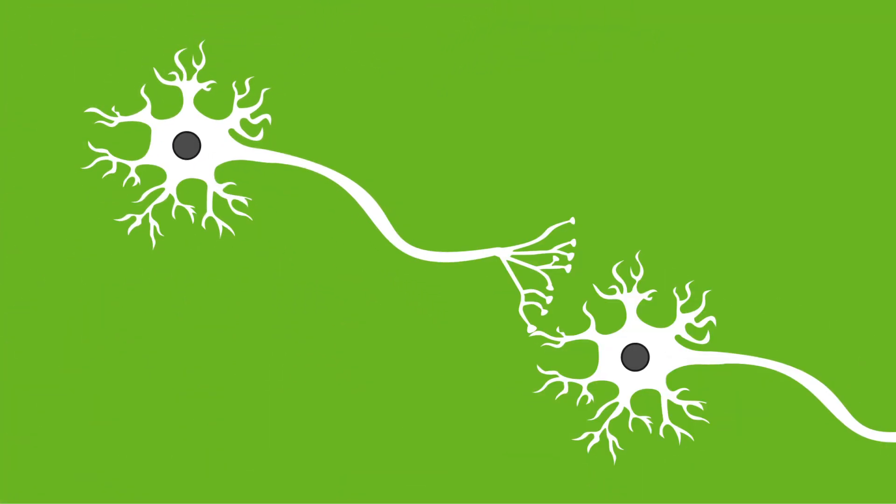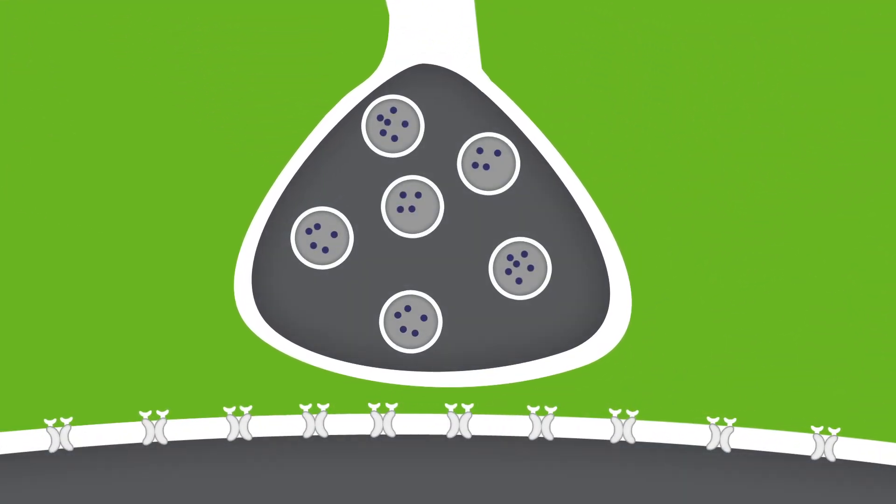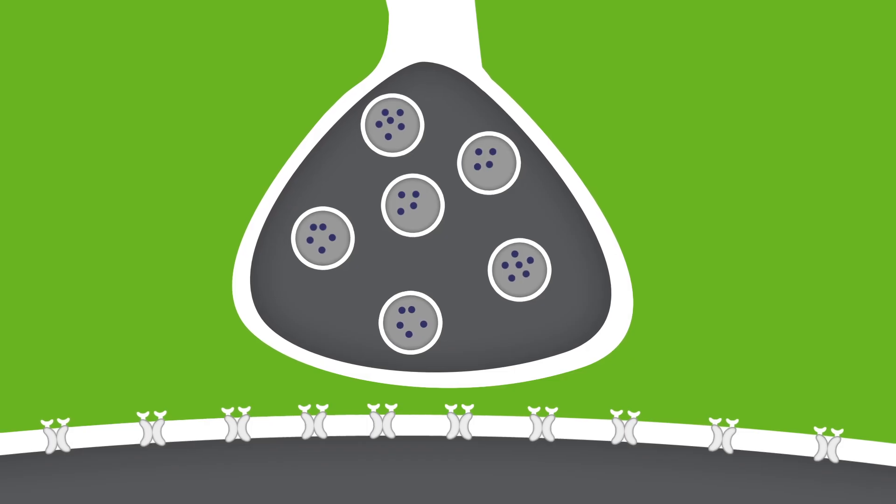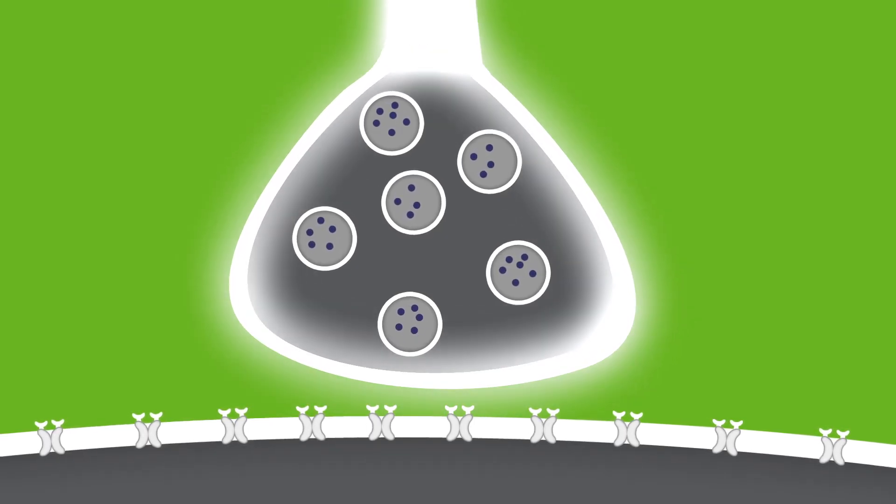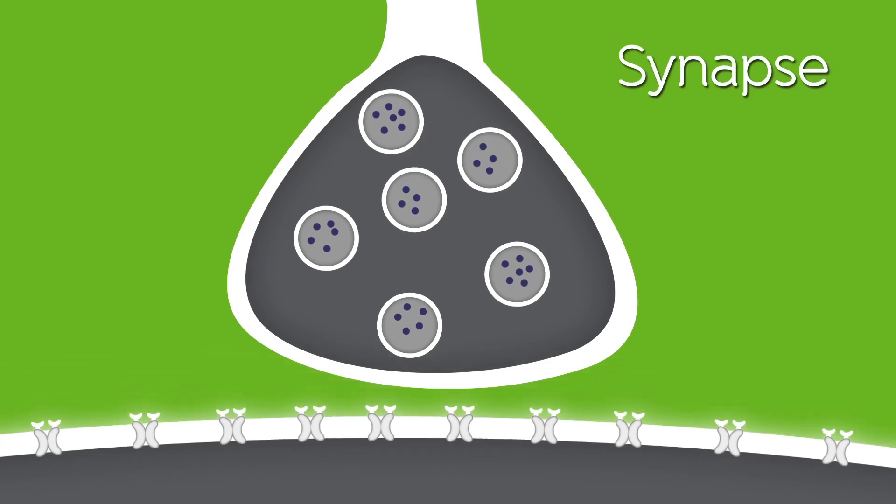However, they can be opened if the right message is received from a neighboring neuron. Each neuron can receive inputs from thousands of other neurons, and the place where one neuron makes a connection with another neuron is called the synapse.